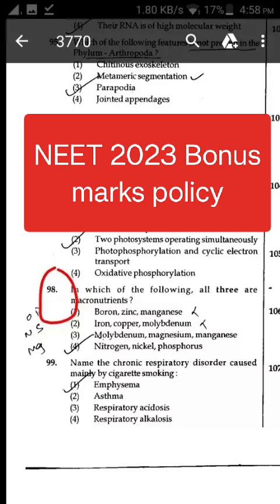If none of the options is found correct, or a question is found to be wrong, or a question is dropped, then all candidates who have appeared will be given four marks (+4) irrespective of the fact whether the question has been attempted or not attempted by the candidate.